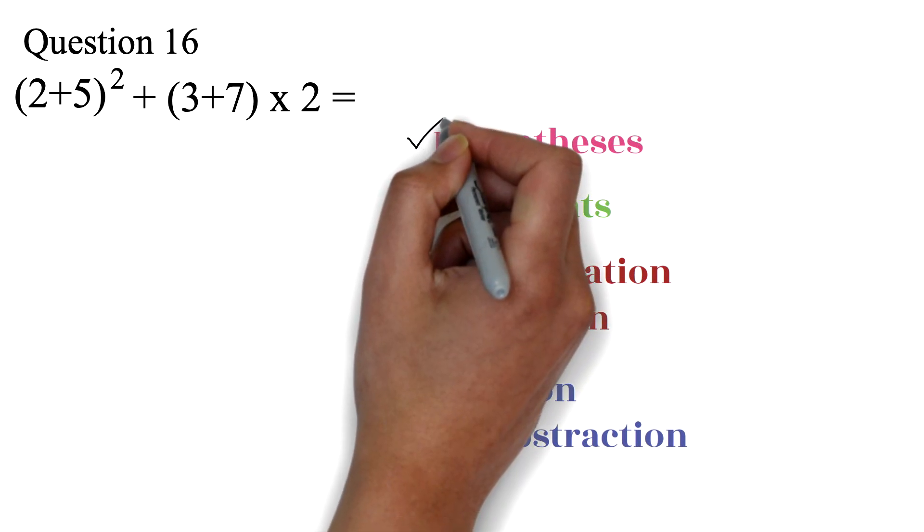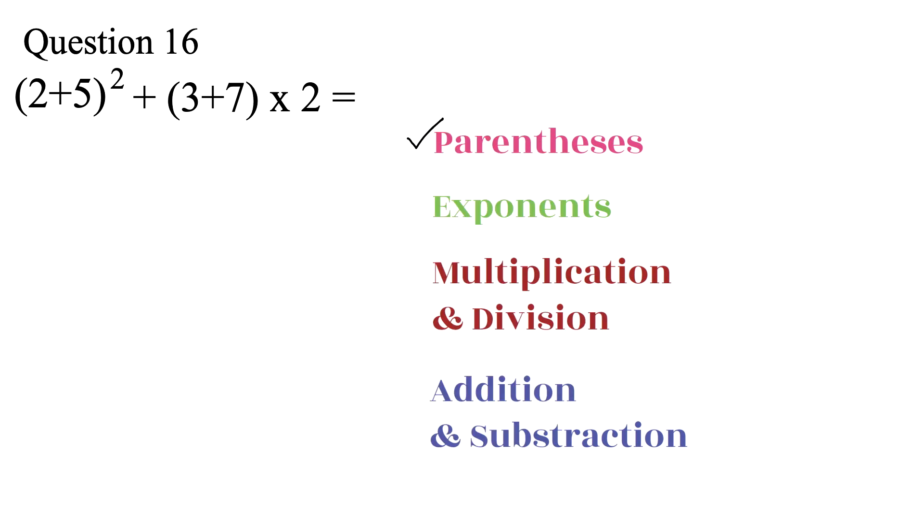Let's bring the order of operations. Here, we have two parentheses. We have to do both of them first, or you can also do one first and then the other next. I'll work on both. For this one, we have 2 plus 5, which is 7.